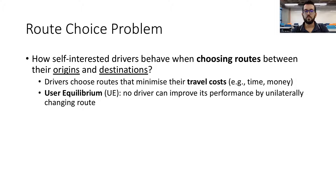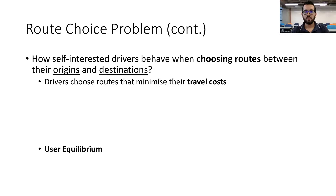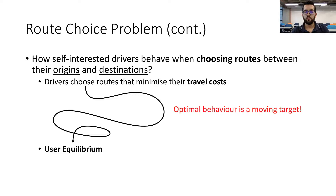The route choice problem is modeled by means of a weighted graph and an OD matrix. The graph represents the road network. The OD matrix represents the drivers and their demand for trips. A solution to this problem corresponds to the assignment of a road to each driver. Although conceptually simple, road choice presents two main challenges. Firstly, the process of finding optimal behaviors that translate individual choices into an equilibrium is not simple, since drivers affect the traffic as perceived by the other agents.